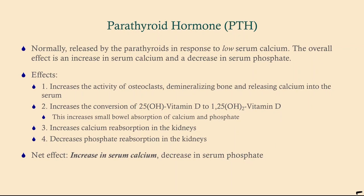Parathyroid hormone is released by the parathyroids in response to low serum calcium. These cells have sensors that detect low calcium levels, and when they do, they release PTH, which signals various parts of the body to conserve or mobilize calcium. The net effect of PTH is most importantly to increase serum calcium, and by doing so it also decreases serum phosphate.